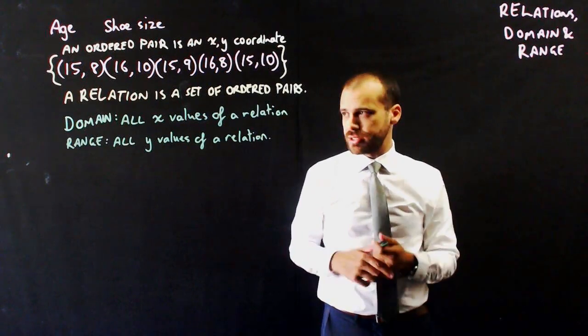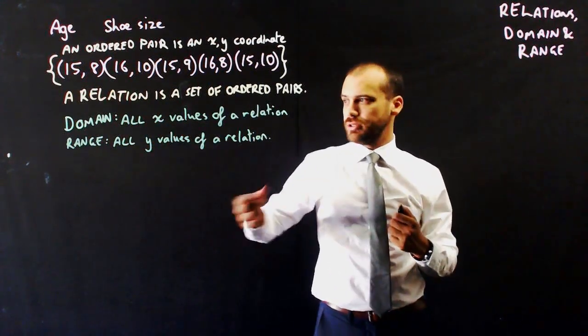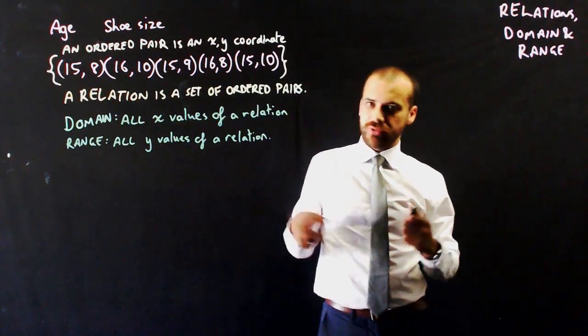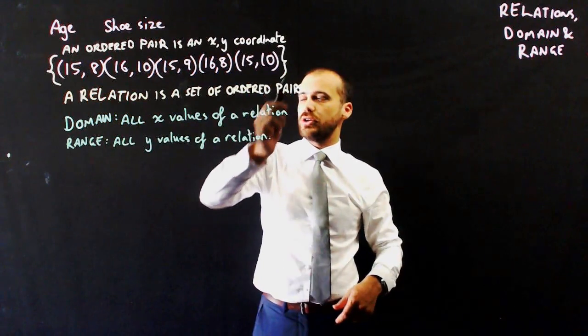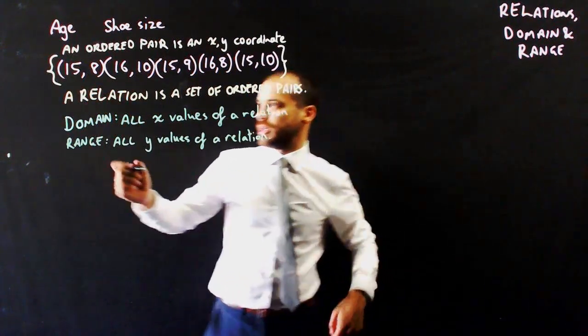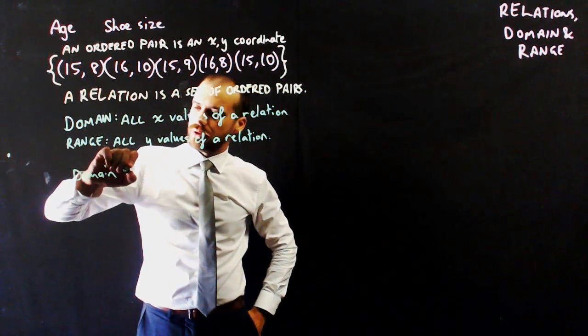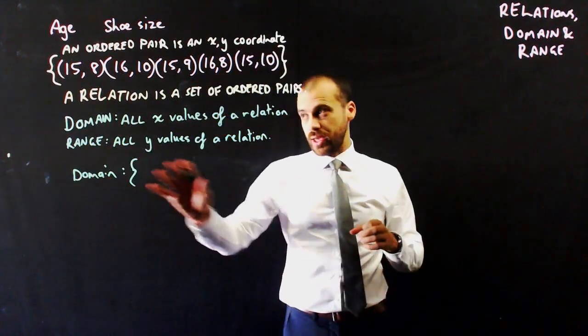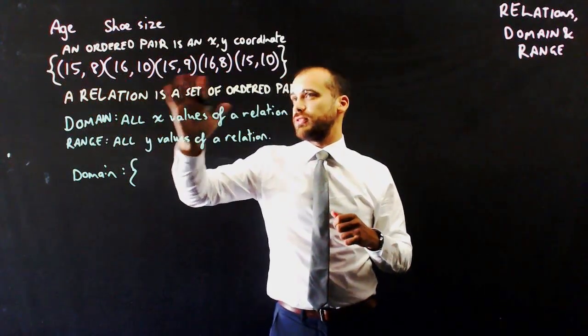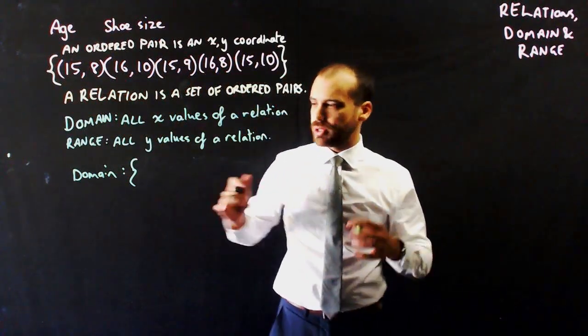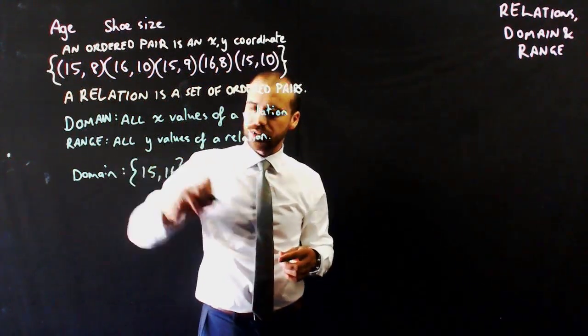So domain and range, they always get mentioned in the same sentence. Domain is all the x values of a relation, and a range is all the y values of a relation. So I can say that the domain of this relation is domain curly bracket, and then all the possible x values. So 15, 16, 15, 16, 15. The only possible x values here are 15 and 16. So a relatively small domain.